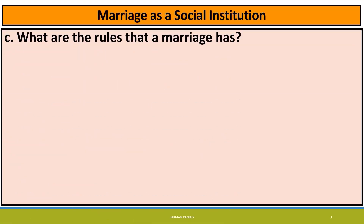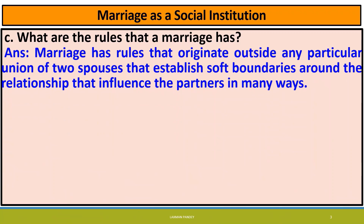Question number C: What are the roles that marriage has? Marriage has roles that originate outside any particular union of two spouses, that establish soft boundaries around the relationship and influence the partners in many ways.